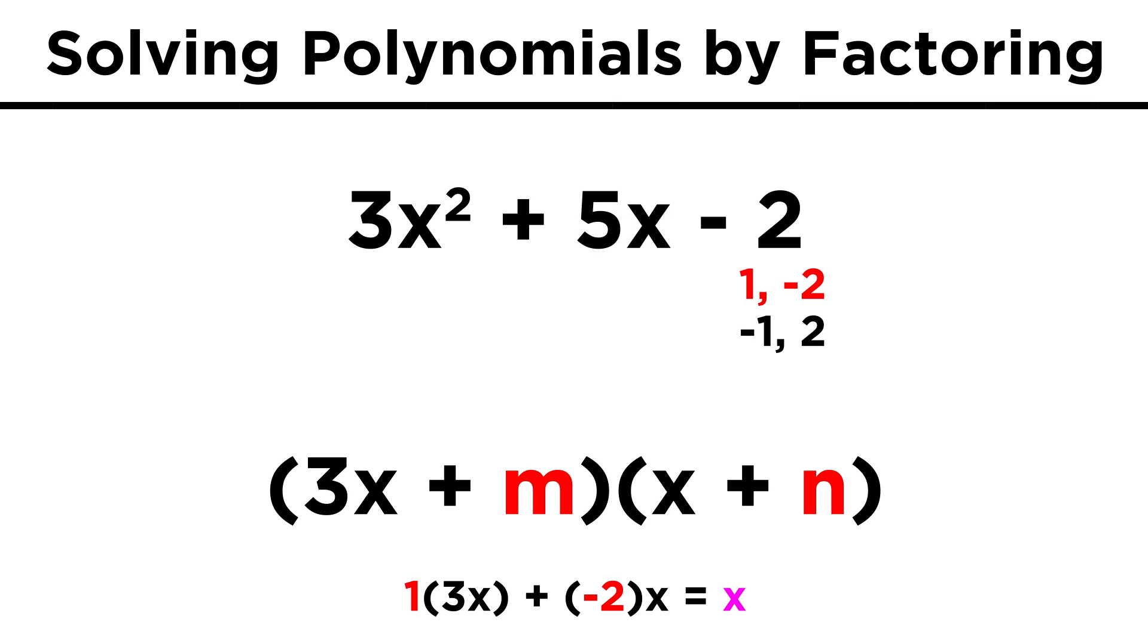First we try one and negative two. That could give us 3x - 2x, but that's no good. x - 6x also doesn't work.